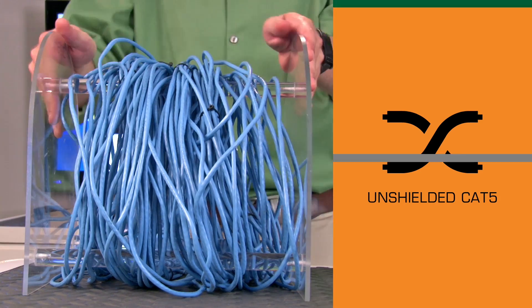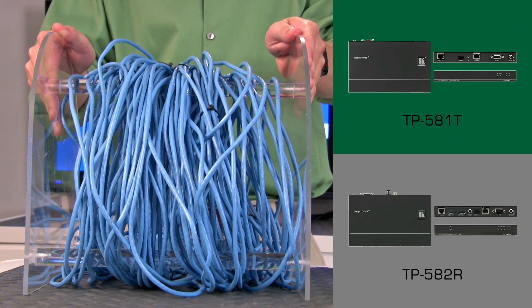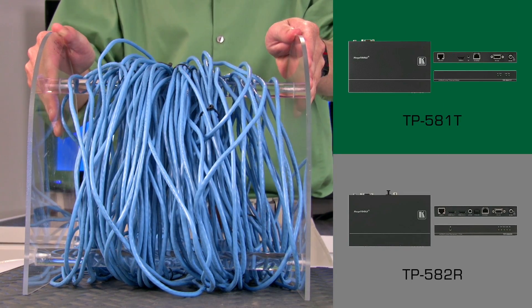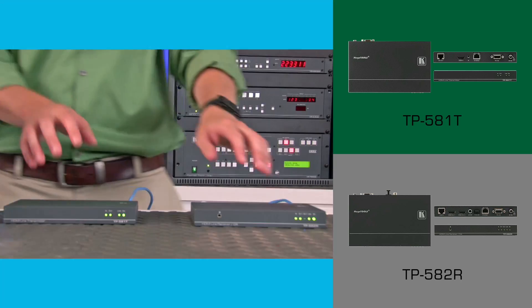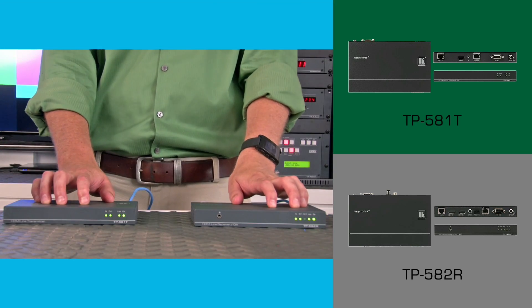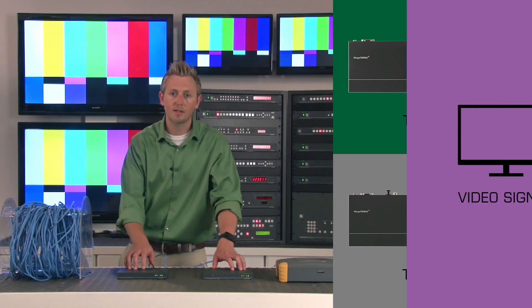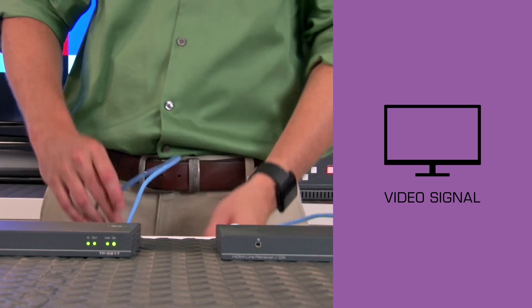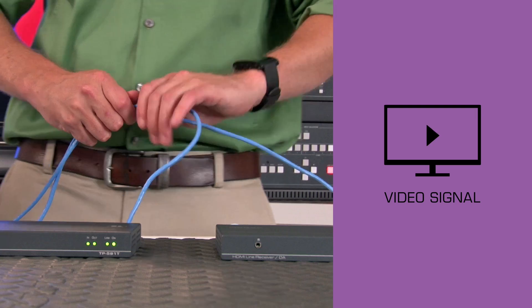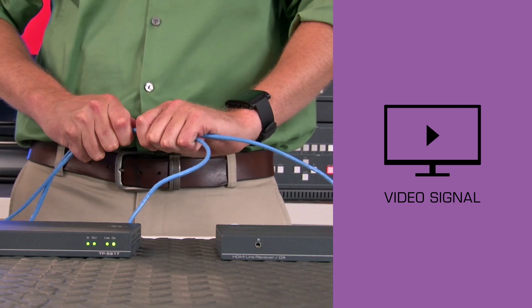Here, we're using a traditional unshielded CAT5 cable between our HDMI HDBaseT twisted-pair transmitter and receiver. As you can see, I have a video signal on the displays behind me. Now, I'm going to simply hold two pieces of cable from this spool closer together, like cable might be run in a piece of conduit. Let's see what happens.